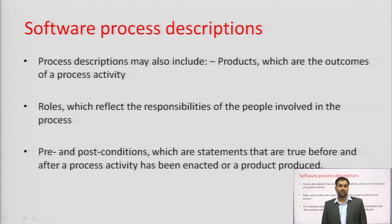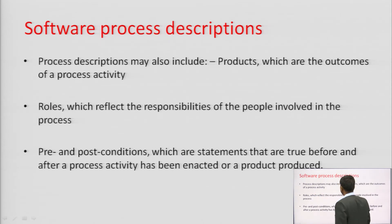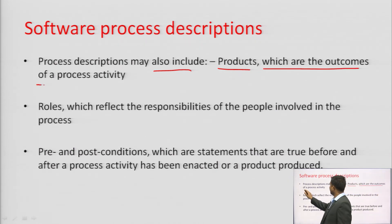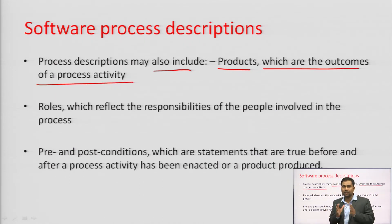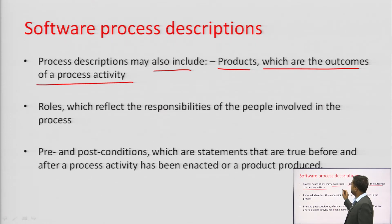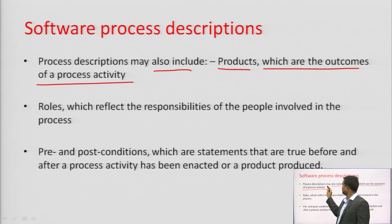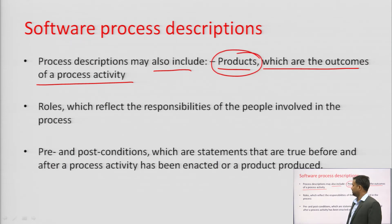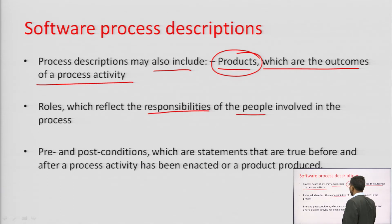Software process descriptions also include products — the outcomes of process activities. Whenever you apply a process, the outcome will always be a software product. So the descriptions include: what will be the outcome — a software product — and roles which reflect the responsibility of the people involved in the process.